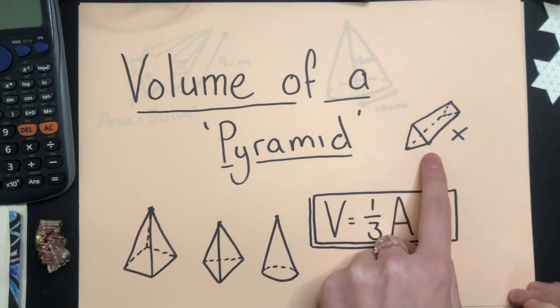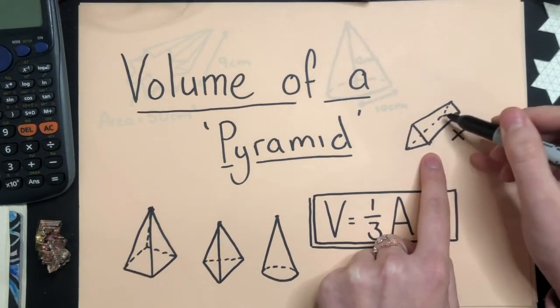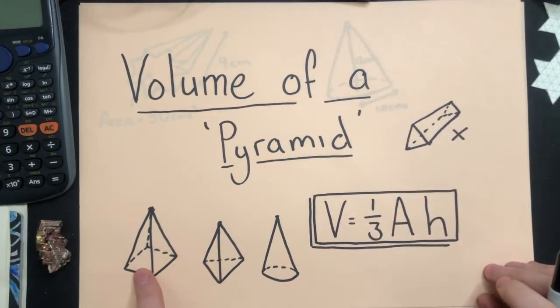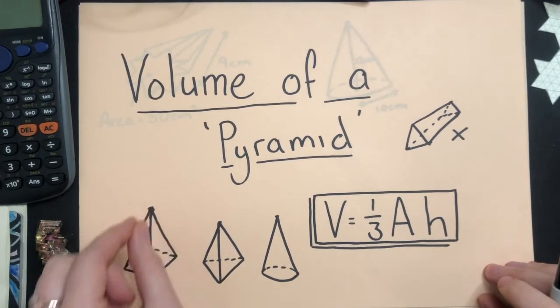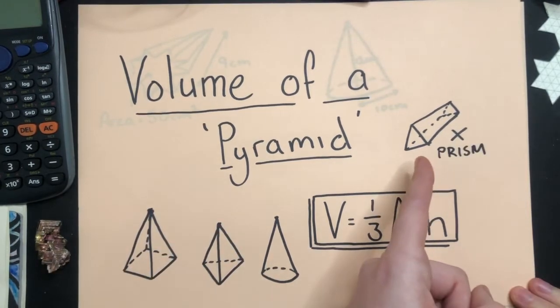This here, however, is a prism because it does not come to a point. So we're looking for a face and then all of the edges coming to one vertex from that face. Not you, you're a prism.